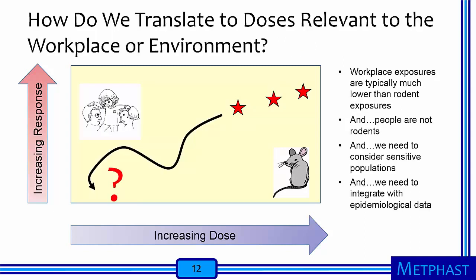How do we translate these high-dose rodent experiments to human populations? It is not trivial. Exposures in the workplace normally result in much, much lower doses than in rodent experiments, and people are not rodents — their uptake and biological response is often very different. We also need to consider sensitive populations: are these healthy workers or are we trying to protect children? Finally, we need to integrate these data with that from epidemiological studies. There are groups that do this type of synthesis of toxicological and epidemiological information for us.